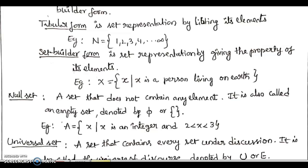Similarly, the other set description form is the set builder form. In this form, instead of listing out the elements of the set, we specify the property that the elements of the set follow. For example, capital X is equal to the elements x such that x is a person living on the earth. This set includes the group of all persons who live on the earth. This is an example of the set builder form of the set.